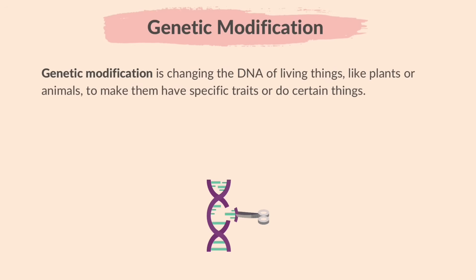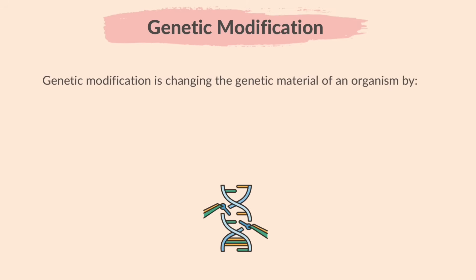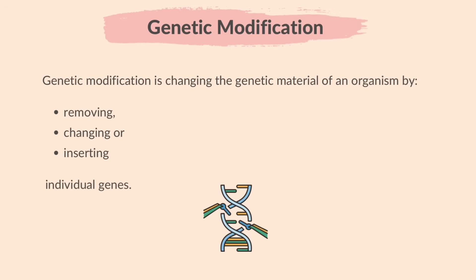Genetic Modification is changing the DNA of living things like plants or animals to make them have specific traits or do certain things. Genetic Modification is changing the genetic material of an organism by removing, changing or inserting individual genes.